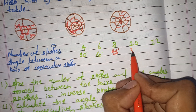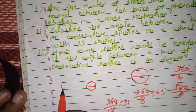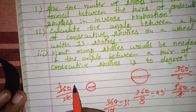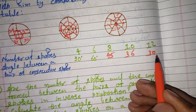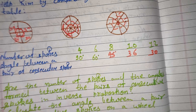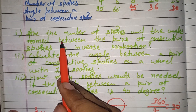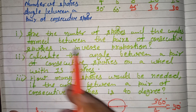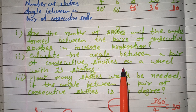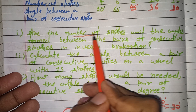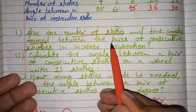Now if you divide into 12 spokes, the consecutive angle will be 30 degrees. 360 divided by 12 gives 30 degrees. So we have completed the table: 4 spokes → 90°, 6 spokes → 60°, 8 spokes → 45°, 10 spokes → 36°, 12 spokes → 30°.